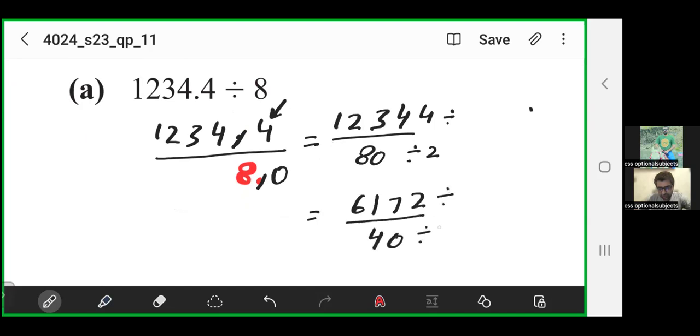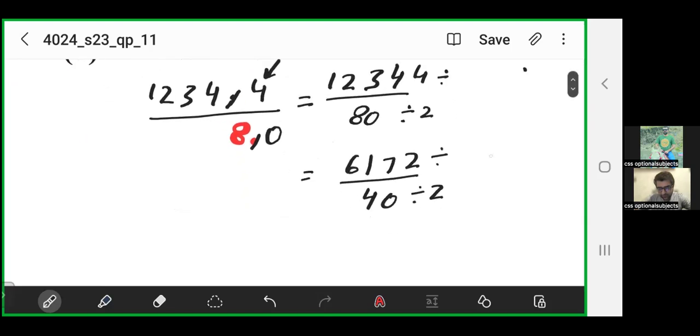Again, you can divide both the numerator and denominator by 2. 30 times 16, 1 will be carried to 7, it will become 17. 8 times 16, 1 will be carried to this 2. It will become 12, 6 times 12 divided by 2, 20 times 4. You get 3086 over 20.